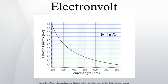In physics, the electron volt is a unit of energy equal to approximately 1.6×10^-19 Joule.